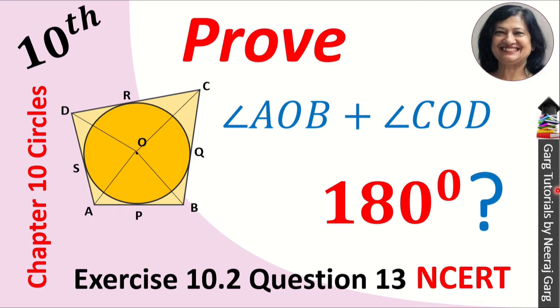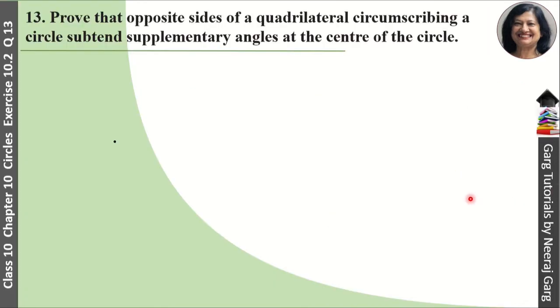Hi, this is Neeraj Garg and you are watching class 10th chapter 10 circles, exercise 10.2, question number 13. The question asks us to prove that opposite sides of a quadrilateral circumscribing a circle subtend supplementary angles at the center of the circle.